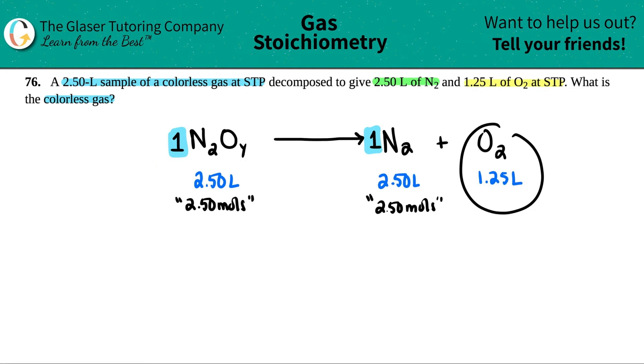So now remember, 1.25 liters is basically the same thing as saying that I have 1.25 total moles of oxygen. Now in this case, if the numbers matched, if we had 2.5 moles and 1.25 moles, if the numbers matched, this would have been a 2 as well.